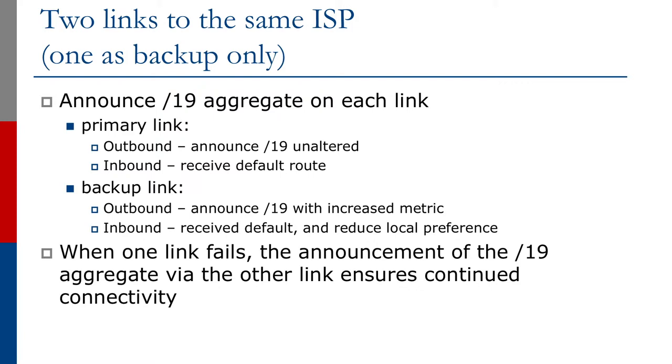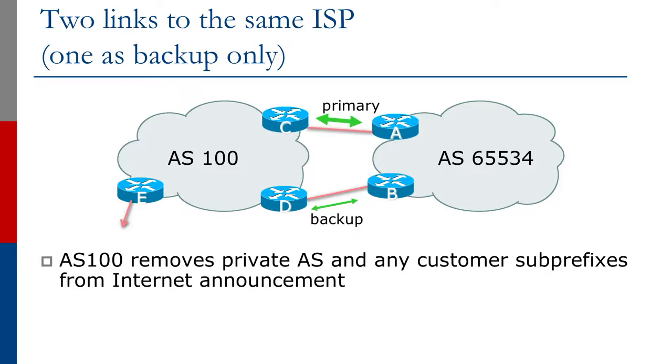To make one path primary and the other backup, we use the BGP metric and local preference attributes. From the end site's perspective, the slash 19 is announced on the backup path with an increased MED metric. The upstream provider then sees two paths — one with metric zero (the default, the primary) and one with a larger non-zero metric, making it the backup path. For inbound traffic, the end site receives the default route on both links. One path keeps the default local preference of 100, while the backup path has its local preference reduced to 80, making it less preferred.